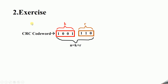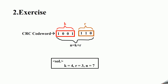Here is an exercise for you — just do it right now, and I will give you 5 seconds to answer it. In this case, we all know K is 4, R is 3, and N is 7.